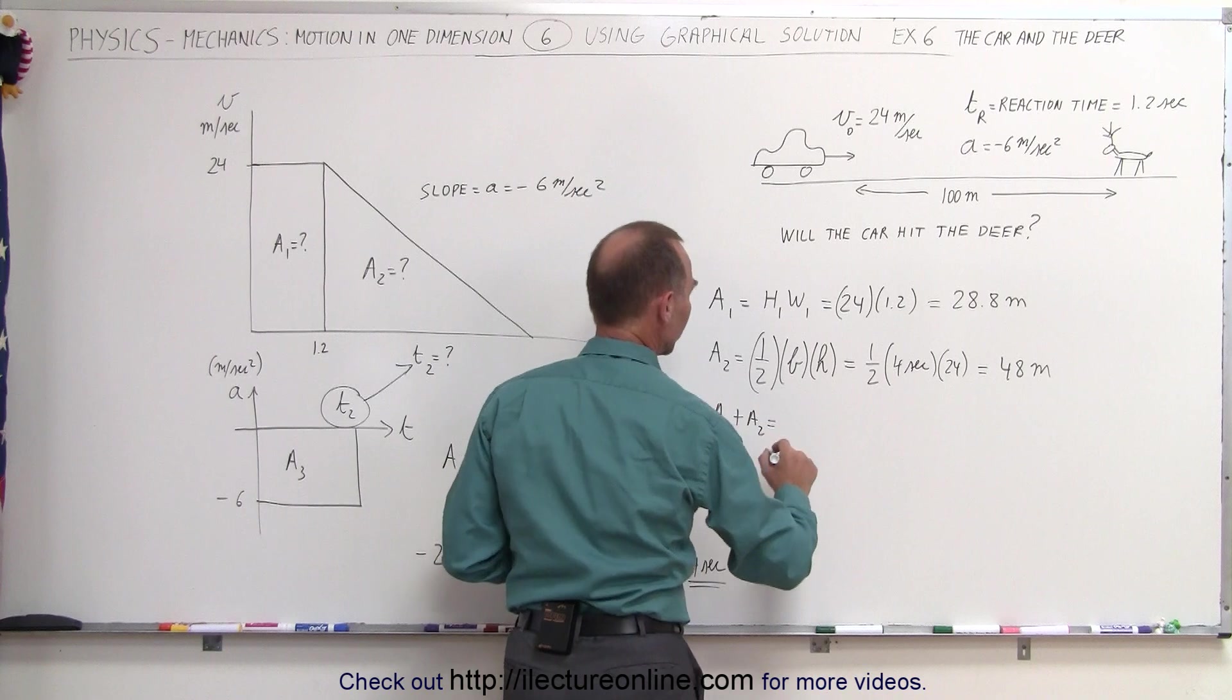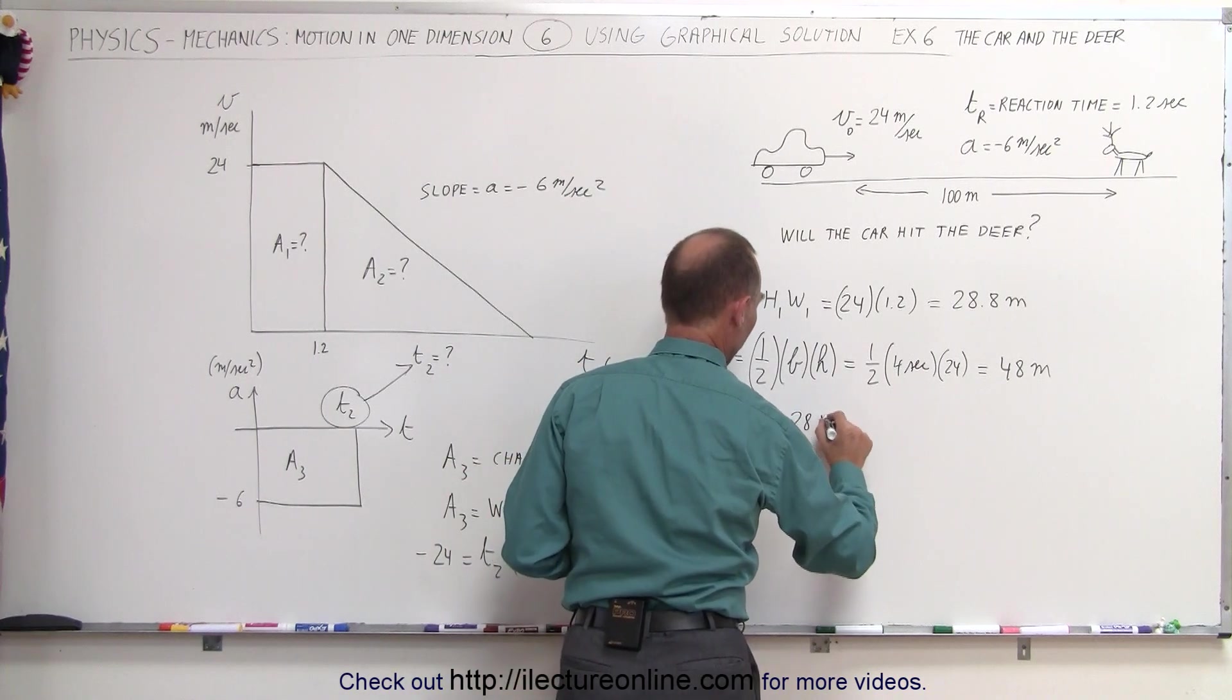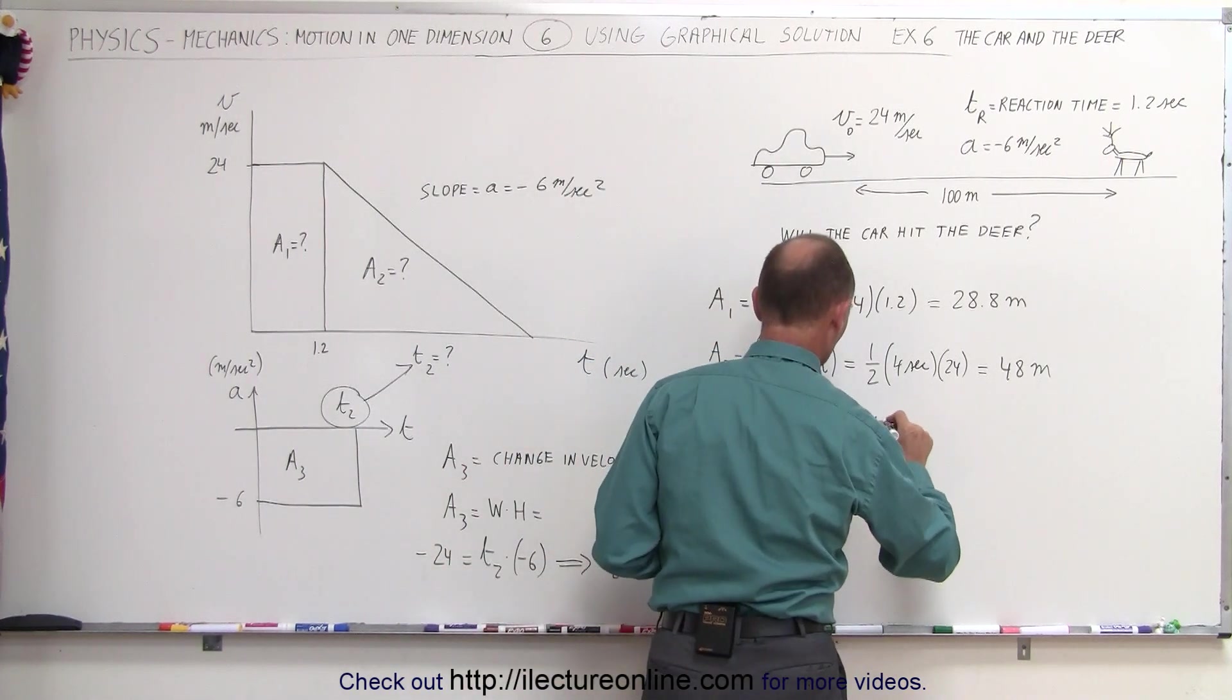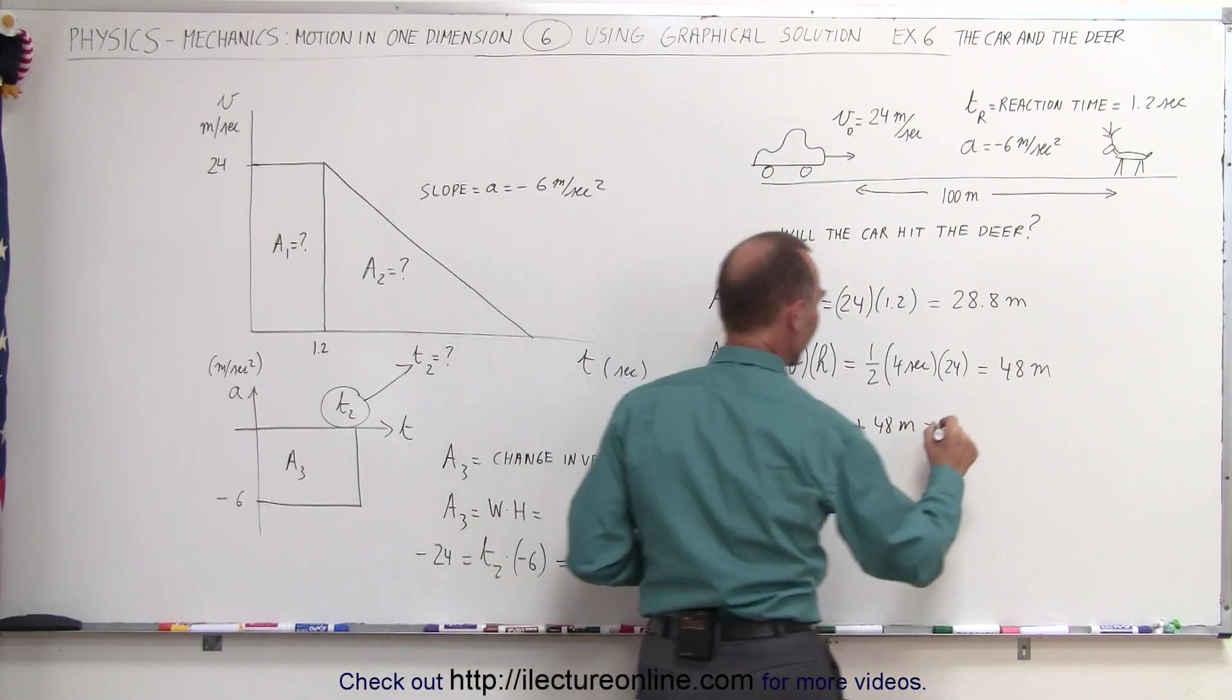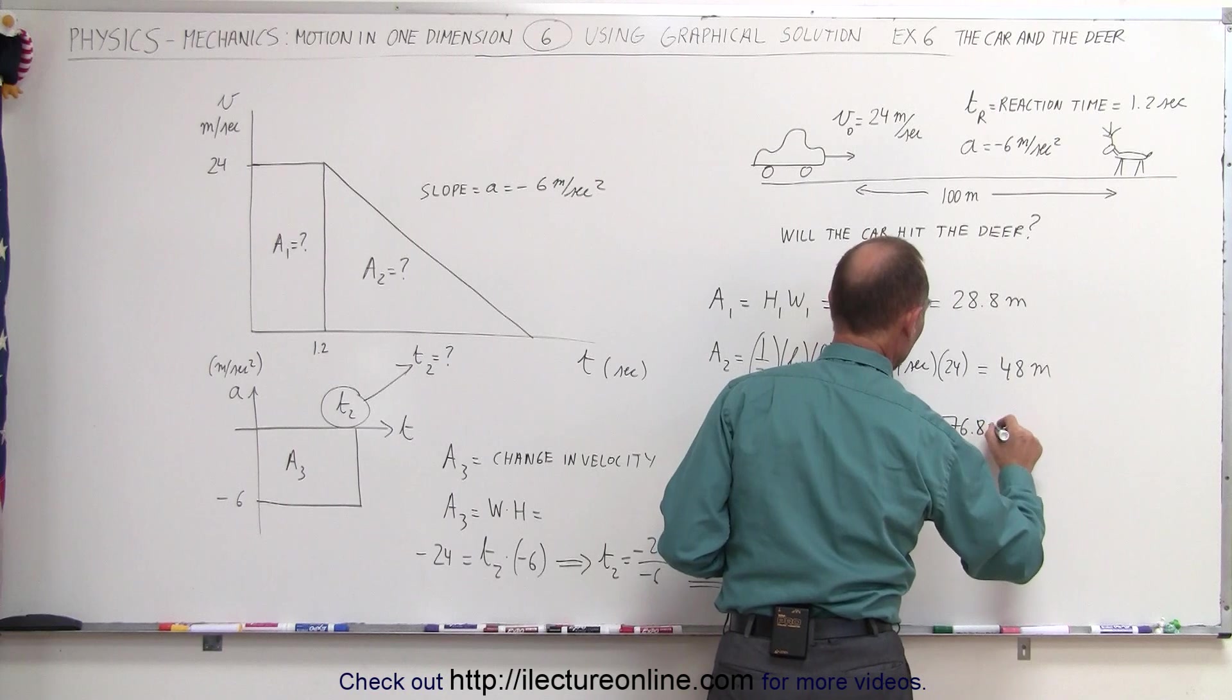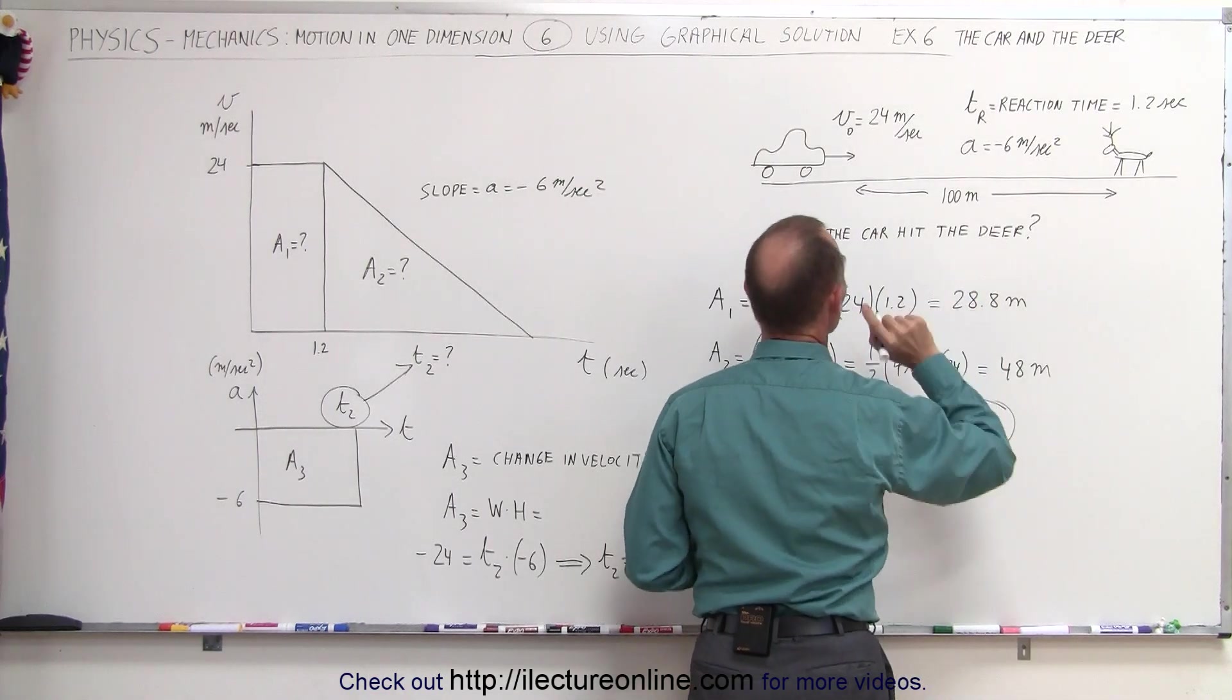When we add a1 plus a2 together—a1 is the distance before braking, a2 is the distance while braking—we get 76.8 meters, which is less than 100 meters. So the car will not hit the deer.